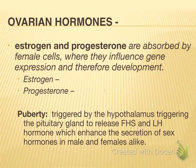Progesterone maintains the thickening of the endometrium wall. If the egg becomes fertilized, it will need a thick endometrium to supply the developing embryo. Progesterone also inhibits FSH and LH secretion so that ovulation will not happen if fertilization has occurred. If the egg is not fertilized, progesterone goes away so the next ovulation can occur. A side note: puberty in women is triggered by the hypothalamus, causing the initial release of FSH and LH, which enhances secretion of estrogen and progesterone and causes ovulation to begin.